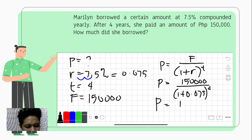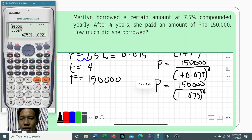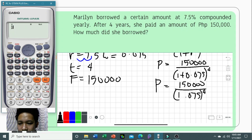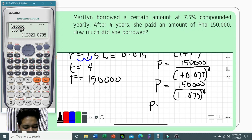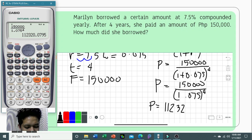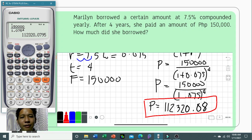Using the calculator, 150,000 divided by 1.075 raised to 4 yields 112,320.08 pesos. So Marilyn borrowed 112,320.08 pesos. That's how we solve for the present value of a compound interest.